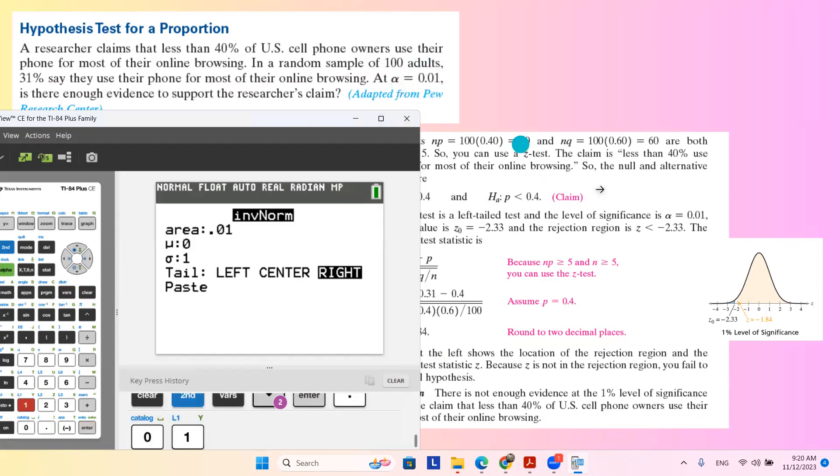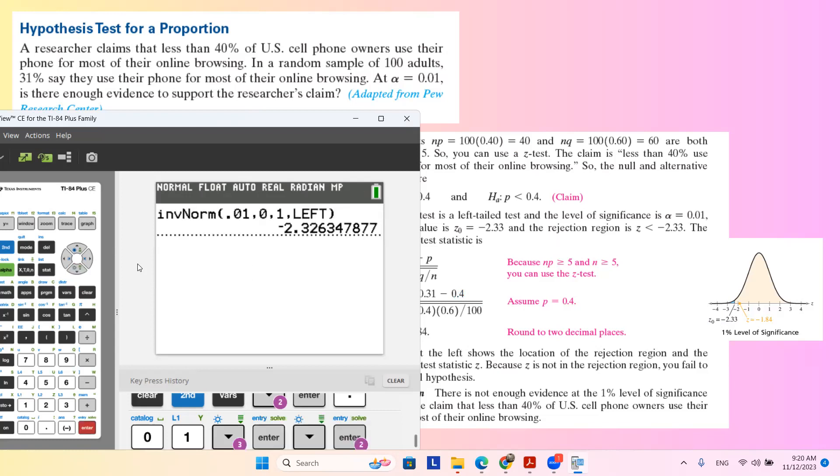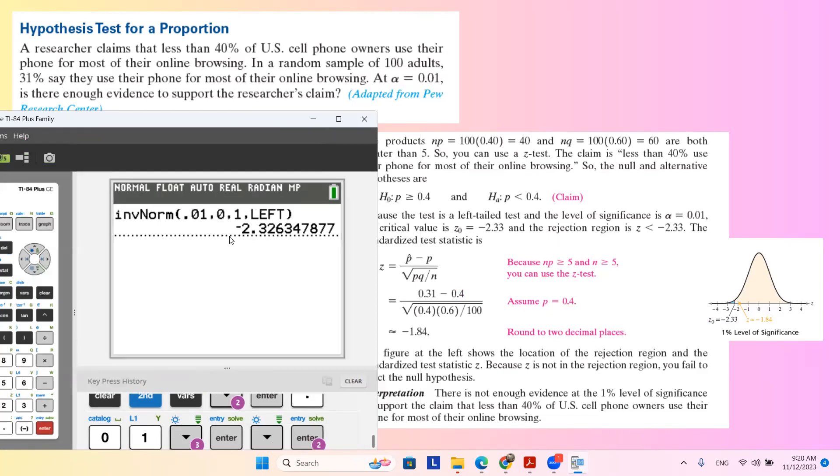And since here you have the area, and you want to try to find Z, the function is invNorm. The area is 1%, so 0.01. Why? Because your alpha is 1%, and here you have a left-tail test. Mean is 0, standard deviation is 1, and it's a left-tail test. So go to paste, and do the calculation, and as you can see, it is negative 2.326, or basically, you can say that it is negative 2.33.